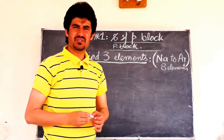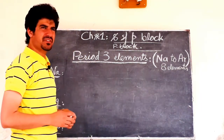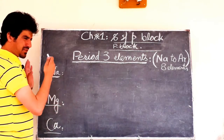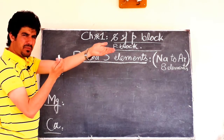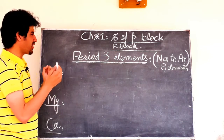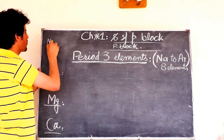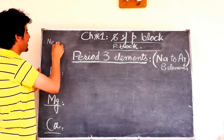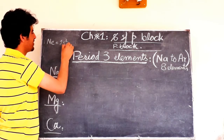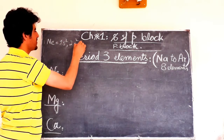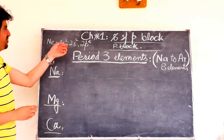Now let's do the electronic configuration of the third period elements. If we check the second period, the last member is neon, and neon's electronic configuration is 1s², 2s², 2p⁶ — which gives us 10 electrons total.